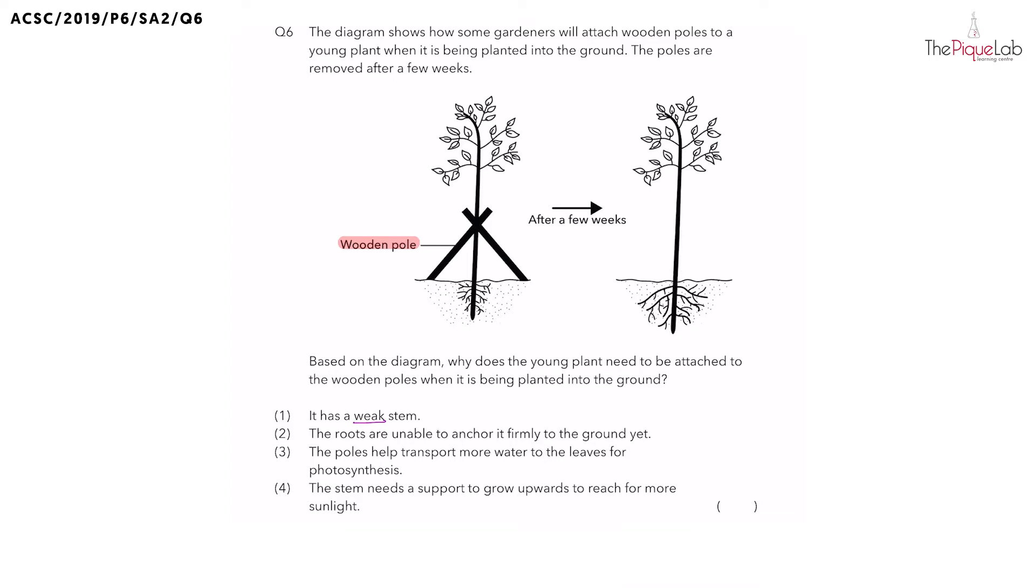Think about it. How does the plant with a weak stem use the wooden pole to keep itself upright? If this is the wooden pole, we would observe that the stem of the plant would actually grow around the wooden pole, just like what I have drawn out in purple. However, do we observe this in the diagram? No, the stem of this plant does not grow around the wooden pole.